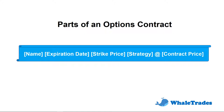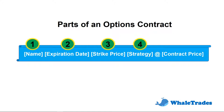First of all, let me open up an options contract. There are 5 components inside. The first one would be the name of the item that you are interested in. The second one is the expiration date of the contract — once the expiration date is over, the contract is no longer valid. The third one is the strike price, which will be the agreed price of the item that you are interested in.